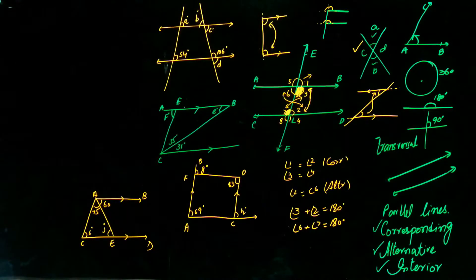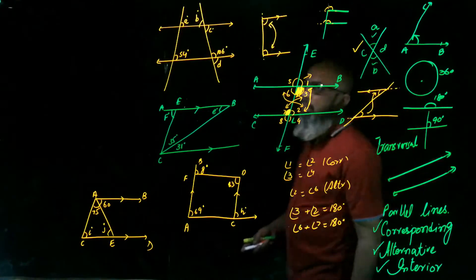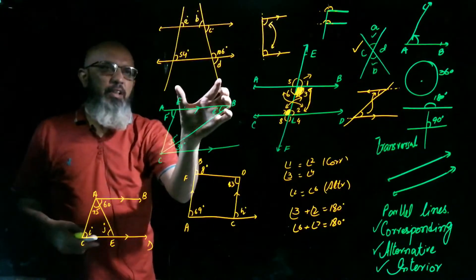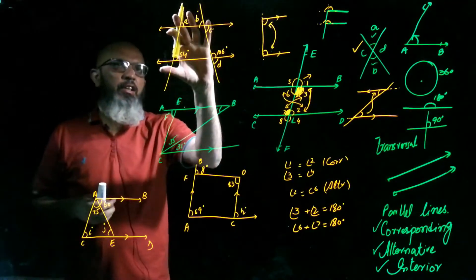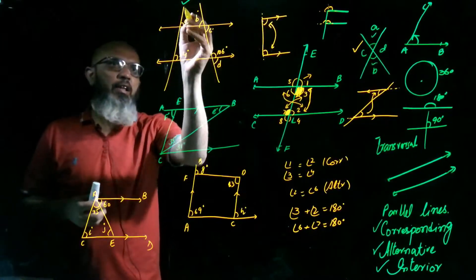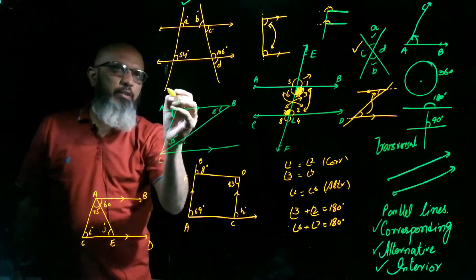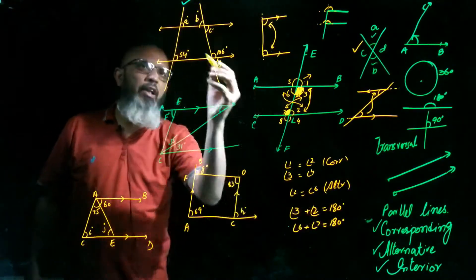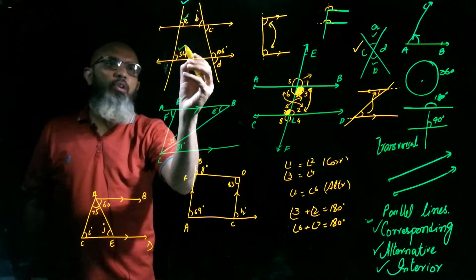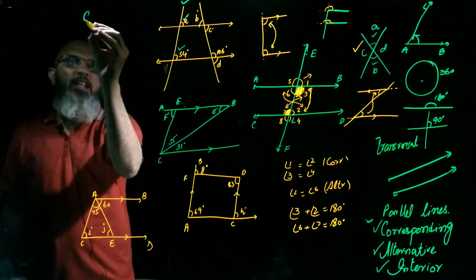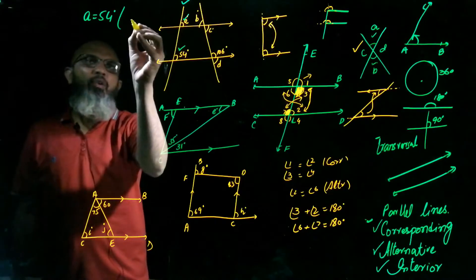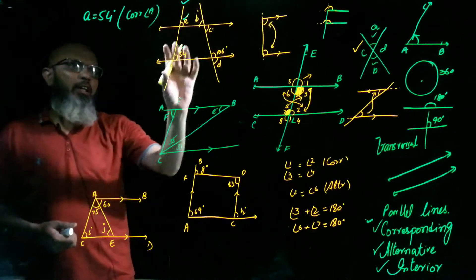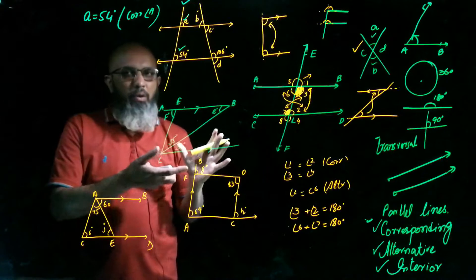Now let's do some questions from Exercise 10B. There are two parallel lines and two transversals. First, consider only one transversal — ignore the other. Looking at the angles formed, they are corresponding angles. So angle A equals 54 degrees. You write here: corresponding angles, to show your teacher you have complete understanding.